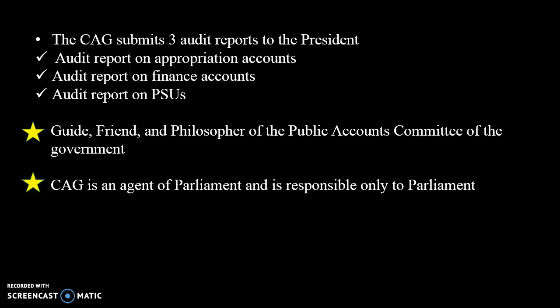The CAG submits three audit reports to the President, who lays them before both houses of Parliament (Lok Sabha and Rajya Sabha). These three reports are: the audit report on appropriation accounts, the audit report on finance accounts, and the audit report on public sector undertakings. The CAG is also referred to as the 'guide, friend, and philosopher' of the Public Accounts Committee. The CAG is an agent of Parliament and is responsible directly to Parliament.